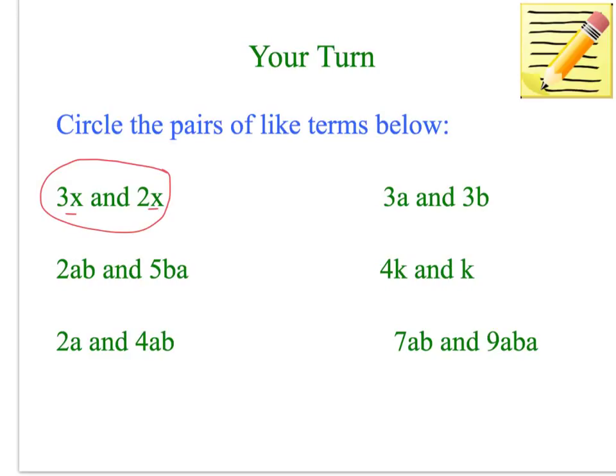2ab and 5ba, well they are the same because they've both got 1a, they've got an a and a b as their variables. 4k and k, yeah, they both have k and they don't have anything else. So they are like terms.